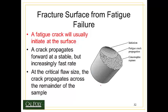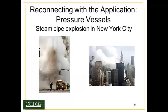Fatigue, which we discussed in the last lecture, also exhibits a telltale fracture surface. Fatigue cracks usually initiate at the surface — we'll often see a small spot that's shiny and flat, which is the initiation site. The crack then propagates forward at a stable but increasingly fast rate, shown by these lines indicating fatigue crack propagation growing outward. Eventually the crack reaches its critical crack size, and fracture occurs rapidly and catastrophically across the remainder of the surface, which appears very tortuous and bumpy.